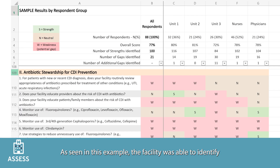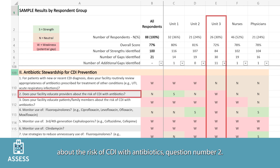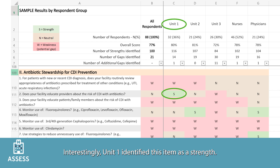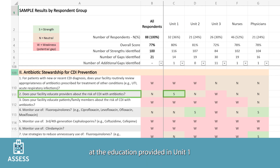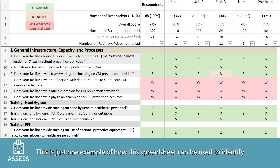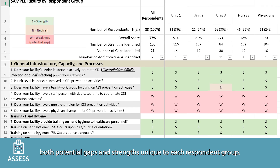In this example, the facility was able to identify that unit 3 had a gap relating to provider education about the risk of CDI with antibiotics — question number 2. This was important because it was not identified as a gap in any other unit; interestingly, unit 1 identified this item as a strength. This facility may find it helpful to take a closer look at the education provided in unit 1 to perhaps replicate it in unit 3 and other units.